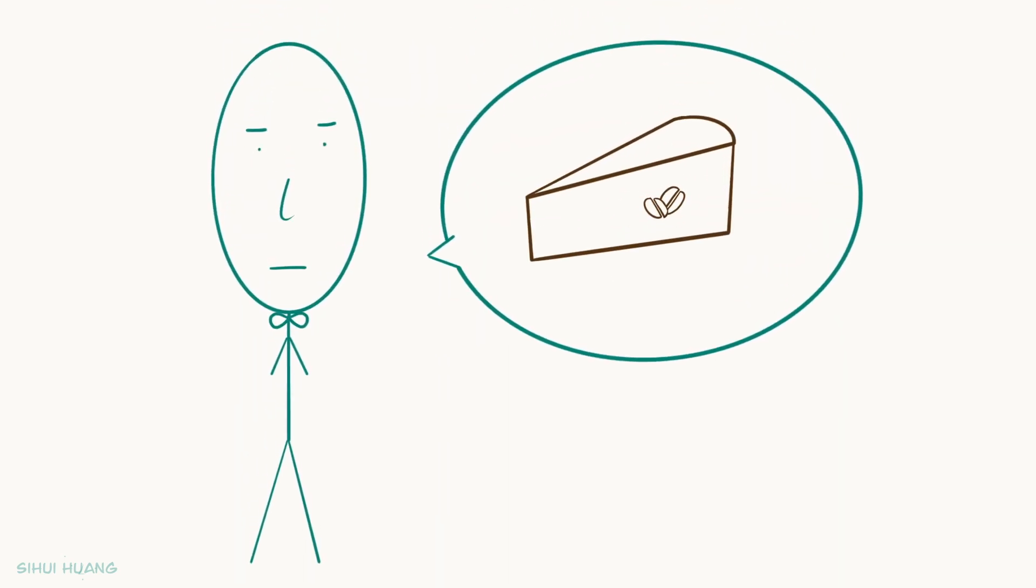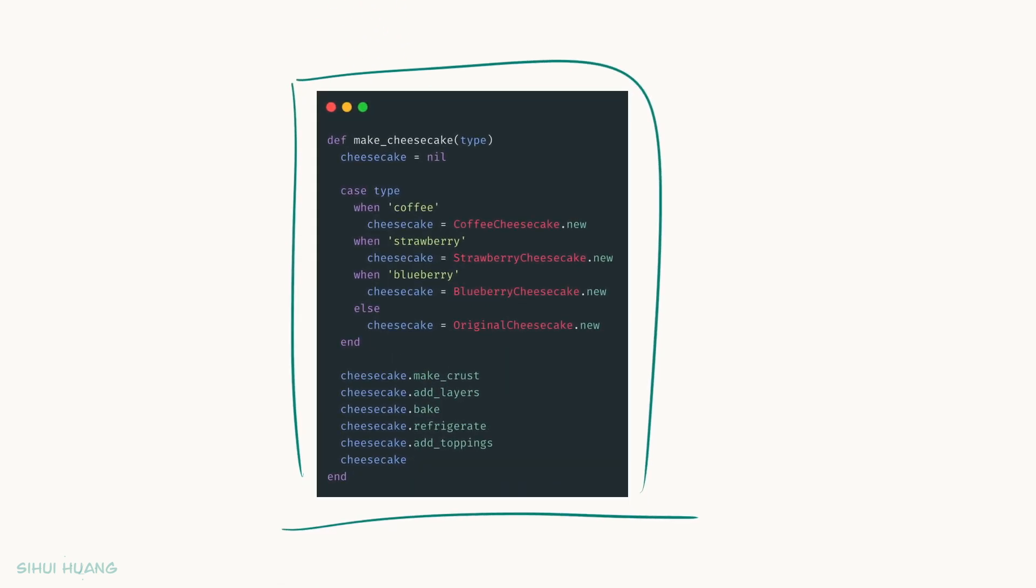One day, Kevin proposed a new flavor: Coffee. Coffee-flavored cheesecake. Jeff thinks about it for a second and says, sure, that sounds delicious. And I know how to change the code to do it. So Jeff goes on to updating the code to handle this new flavor. And now, if the cheesecake type is coffee, the code will use the coffee cheesecake class.